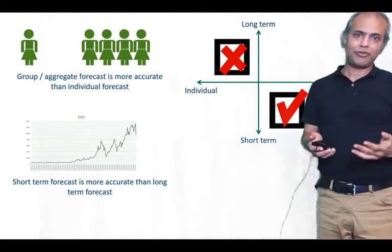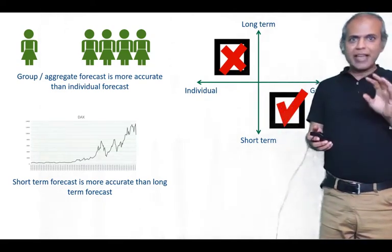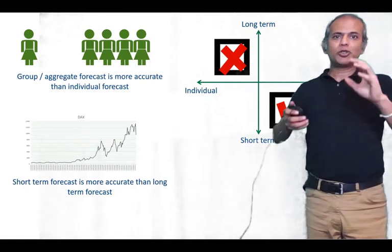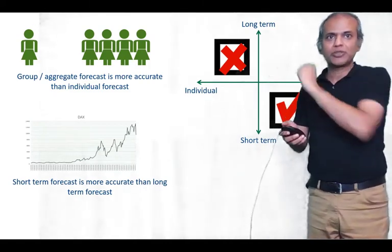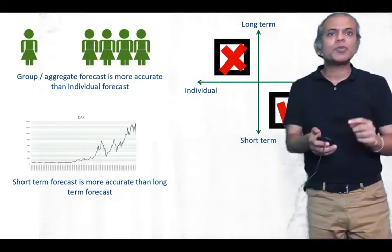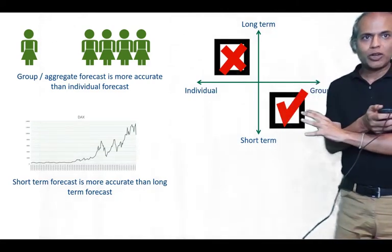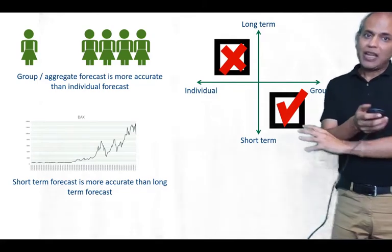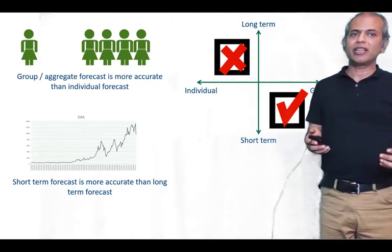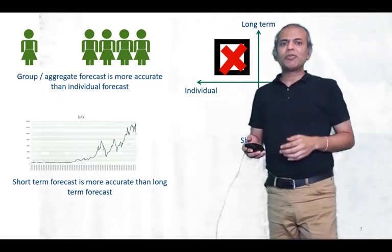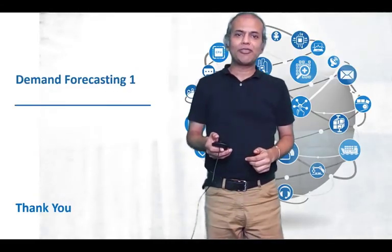To improve forecast accuracy, we should avoid the long-term and individual quadrant, and stay as much as possible in the group and short-term forecasting quadrant. By doing that, we will automatically improve the accuracy of our forecasts. Thank you for staying with me for the second video, and see you in the third video.